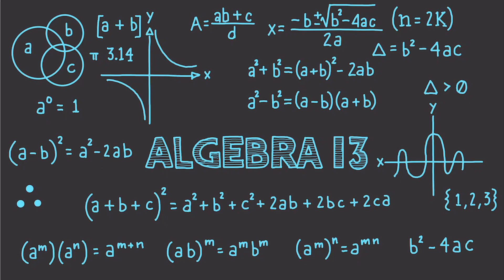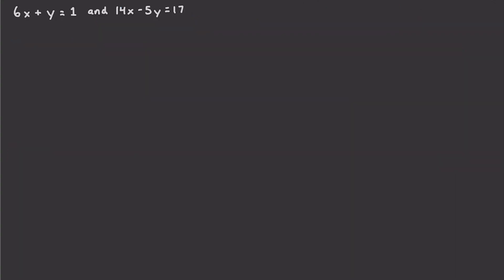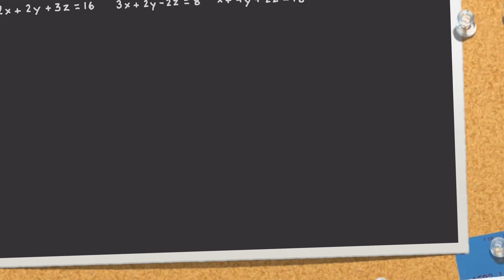Hello, Internet, and welcome to part 13 of my Algebra video tutorial. In this part of the tutorial, I'm going to continue showing you how to solve systems of equations by converting matrices into reduced row echelon form. I'm going to do a slightly more complicated problem, and then solve three equations with three variables all in one matrix using reduced row echelon form. So let's get into it.